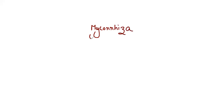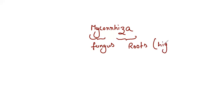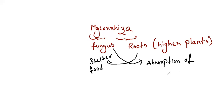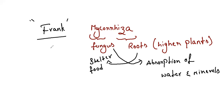What is mycorrhizae? Myco means fungus and rhizae means roots — so it refers to the roots of higher plants. For example, coniferous plants will have a mycorrhizae association; gymnosperms are a key example. The fungus gets shelter as well as food, while in return the fungus provides absorption of water and minerals. The name mycorrhizae was given by Frank in 1885.